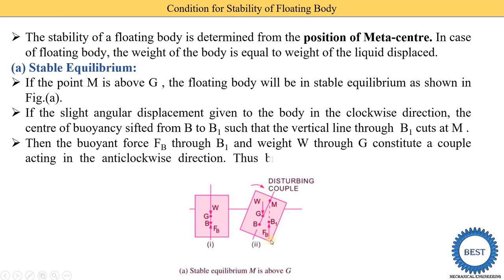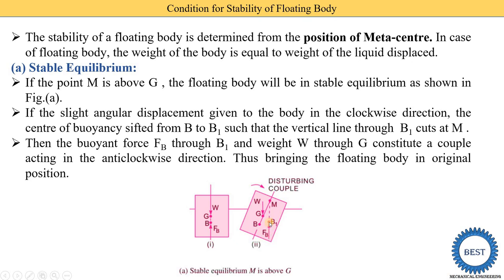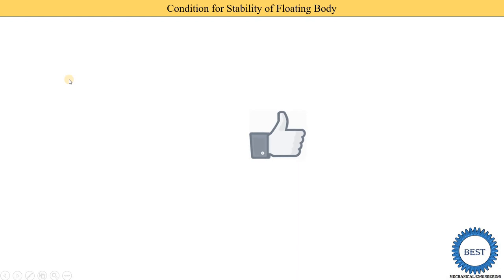The buoyancy force FB acting through B1 and the weight W acting through G constitute a couple in the anti-clockwise direction, which brings the floating body back to its original position. Since we applied a clockwise disturbing couple and the restoring couple is anti-clockwise, the body returns to its original position — this is called stable equilibrium.